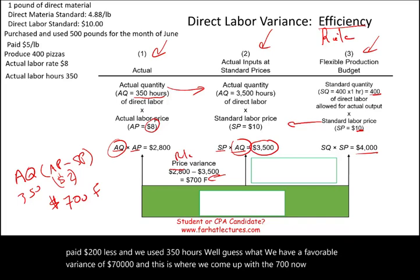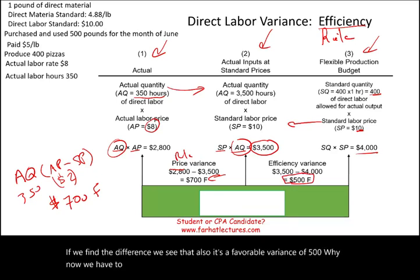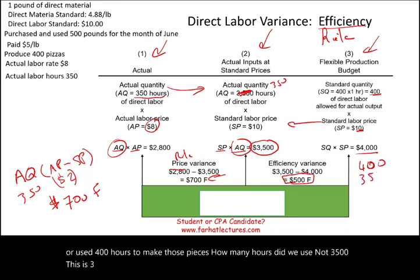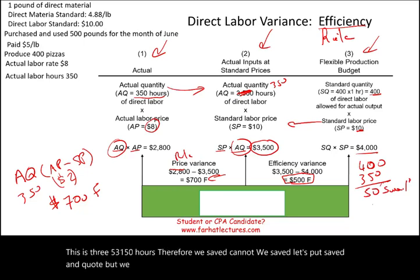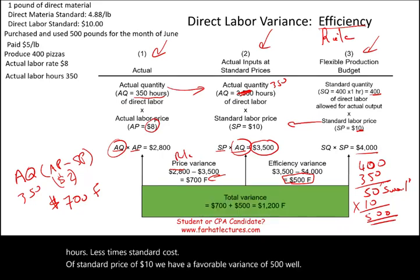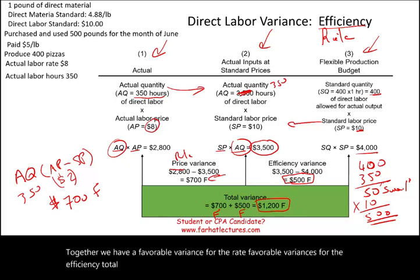The difference between column two and column three gives the efficiency variance. We should have used 400 hours but only used 350 hours — 50 hours less times the standard rate of $10 gives a favorable efficiency variance of $500. Together, favorable rate variance of $700 plus favorable efficiency variance of $500 gives a total labor favorable variance of $1,200.